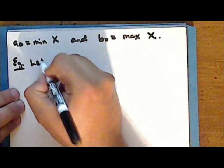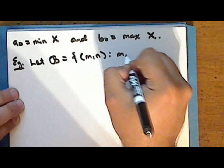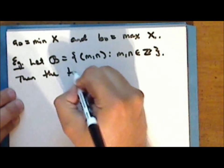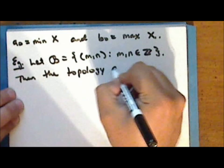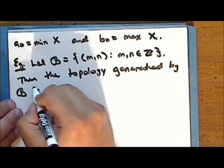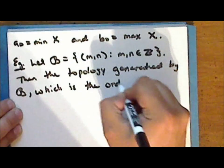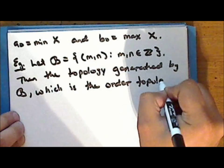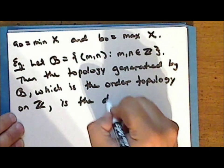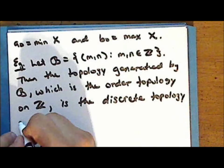As an example, let the collection script B be the set of all open intervals from m to n where m and n are integers. Then the topology generated by the collection script B, which is the order topology on the set of integers, is the discrete topology on the set of integers.